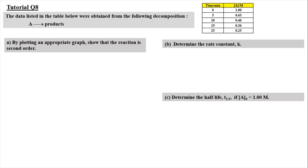Moving on to tutorial Question 8. The data in the table shows decomposition of reactant A to product: at time 0 the concentration is 1 molar, after 5 minutes it's 0.63, after 10 minutes it's 0.46, and so on. For part A, by plotting a graph, we need to show that the reaction is second-order. Using the integrated rate law 1/A equals 1/A0 plus KT, this is a linear relationship: Y is 1/A, M is K, X is T, and C is 1/A0. So we plot 1/A versus time and check for a straight line.